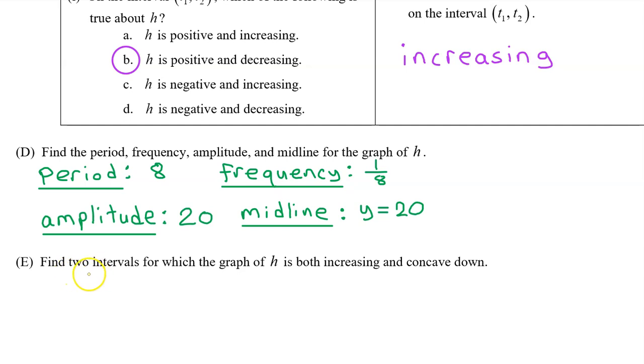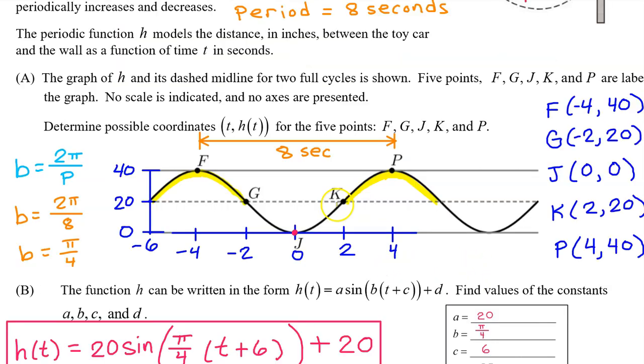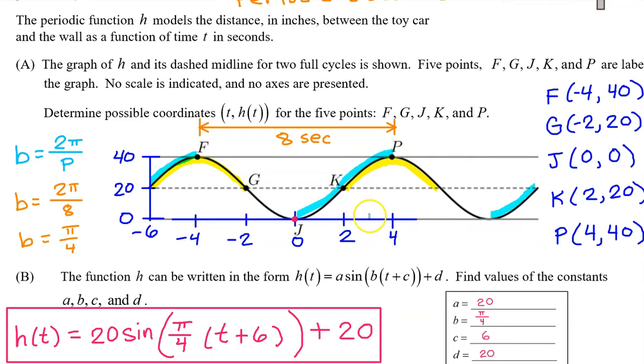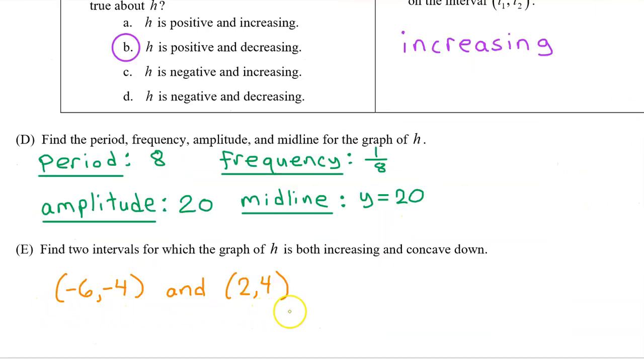Part e. Find two intervals for which the graph of h is both increasing and concave down. H of t is concave down on these two intervals. H of x is increasing on these three blue intervals. H of x is both concave down and increasing on the interval from negative 6 to negative 4 and again on the interval from 2 to 4. So, this is the answer to part e.